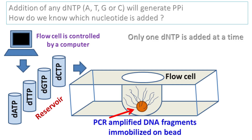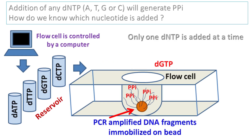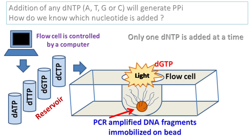There are many copies of the same template DNA generated by PCR. Because of this, when a dNTP is added, a large number of pyrophosphate molecules are released. Hence, the light produced will be intense and easily detected by the sensors.